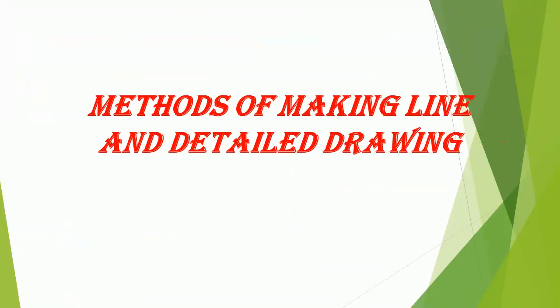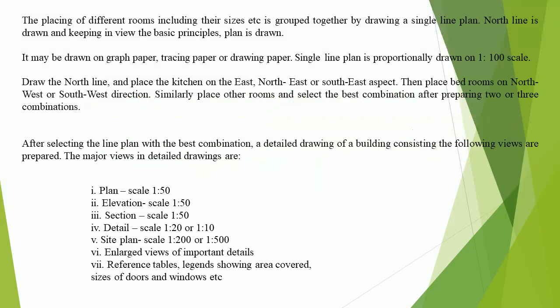Methods of making line and detailed drawing: the placing of different rooms including their sizes etc. is grouped together by drawing a single line plan. A north line is drawn and keeping in view the basic principles, the plan is drawn. It may be drawn on graph paper, tracing paper, or drawing paper. Single line plan is proportionally drawn on 1:100 scale.